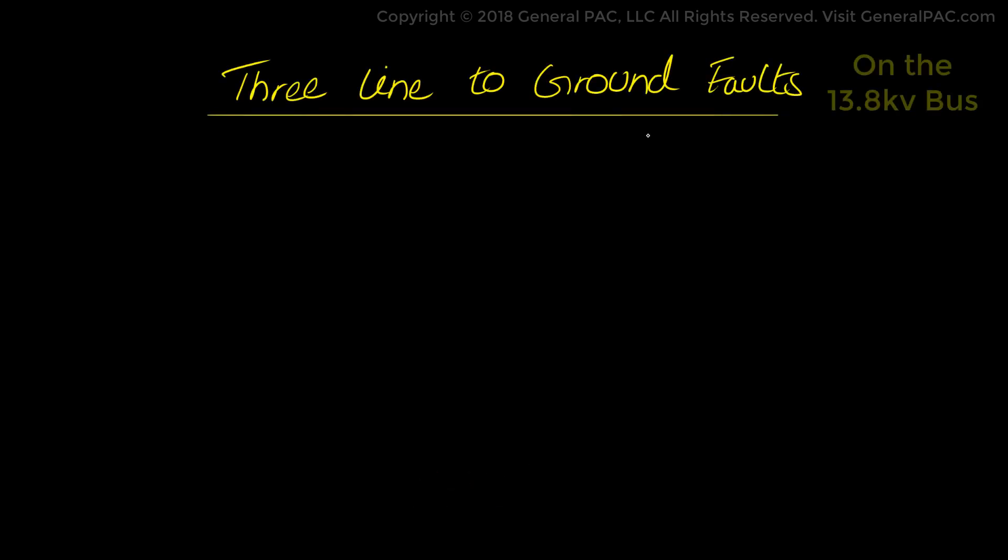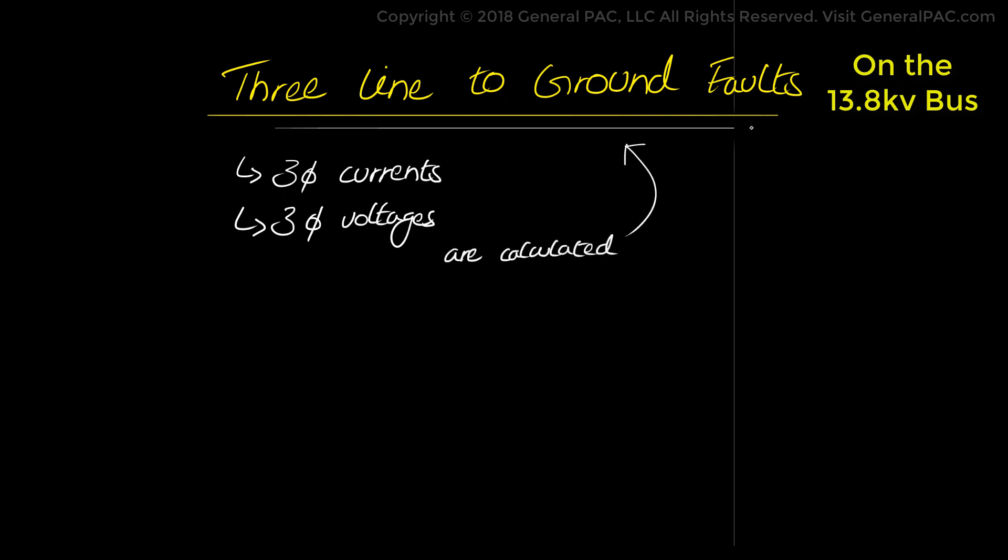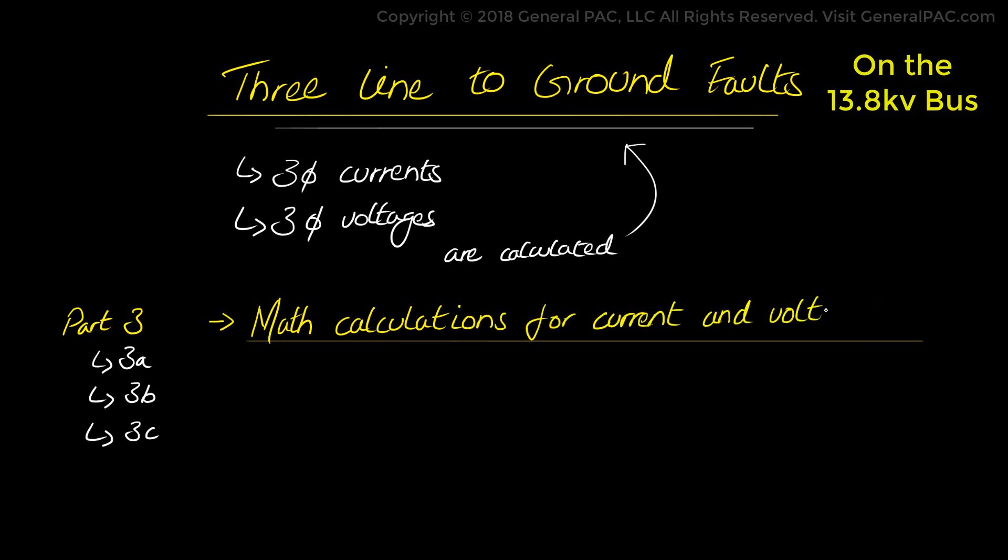This is part 3A of this series on fault analysis in power systems where we will discuss 3-line to ground faults. In other words, we will see how 3 phase current and voltage quantities are calculated for 3-line to ground faults. In the previous part, we talked about per unit systems and sequence network diagrams. In part 3 of this series, meaning part 3A, part 3B, 3C, and so forth, we will explain the math calculations by hand for current and voltage quantities for various types of faults including the